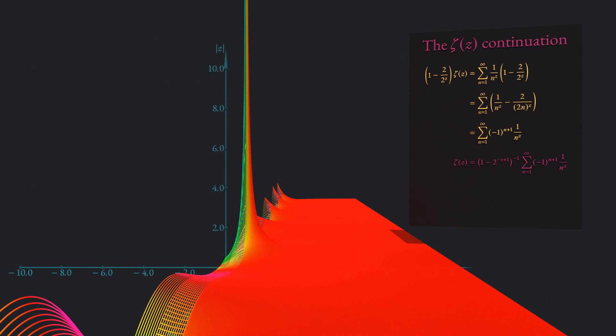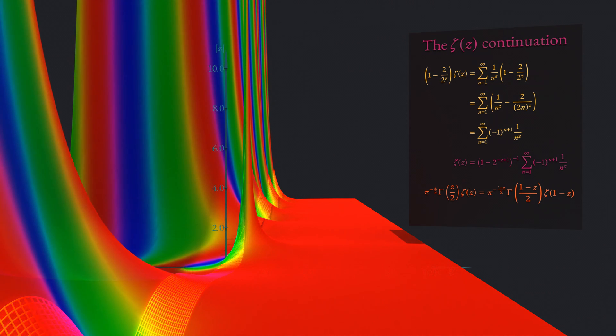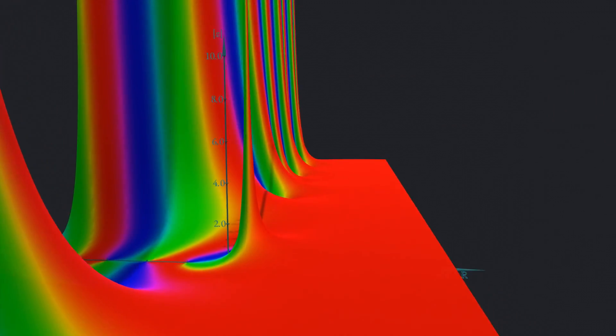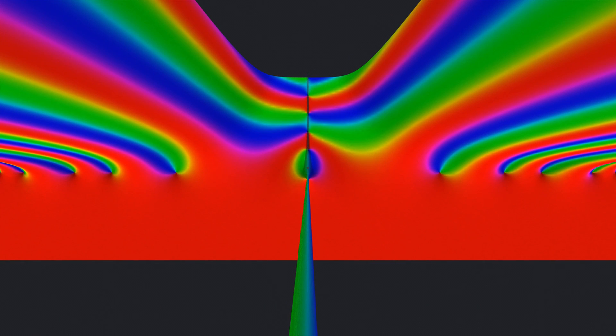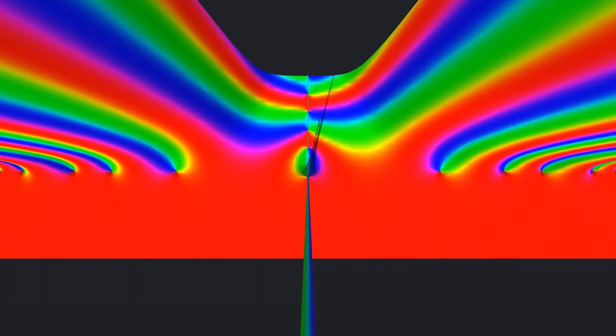It is Riemann's hypothesis, whose proof is worth one million dollars, that all of these zeros are located on the critical line with real part one-half. By virtue of a functional equation, zeta can be calculated everywhere on a complex plane. And additional zeros appear for every even negative integer. For much more details on this continuation, I highly recommend the video series by the YouTuber ZetaMath, which is linked above and in the video description.